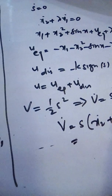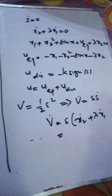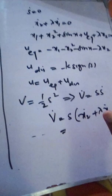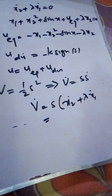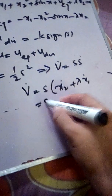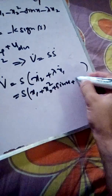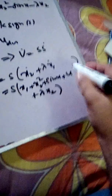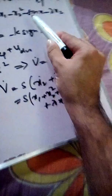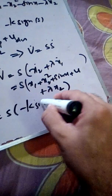We must substitute the complete control — not just u_equivalent — because the system receives both the equivalent and discontinuous parts. When we substitute the state equations and the complete control u_equivalent plus u_discontinuous into the expression, all terms cancel out except the discontinuous part. We are left with V_dot equals s times (x1 plus x2 squared plus sine of x plus u_complete plus lambda times x2), which simplifies to s times minus k times sign(s).